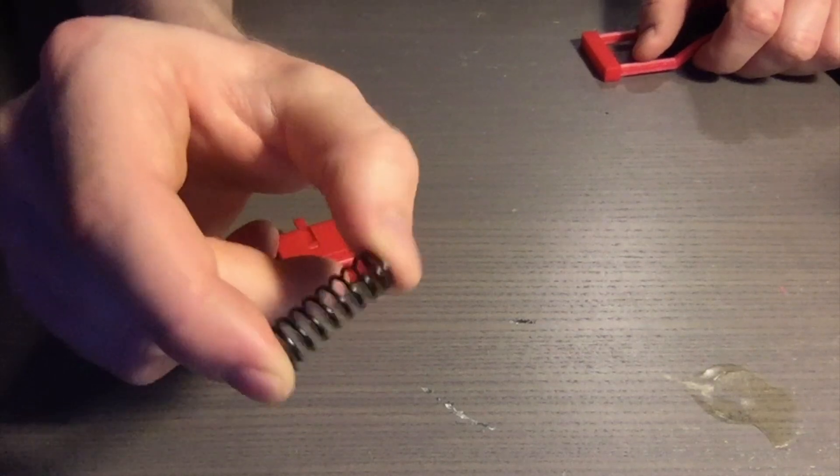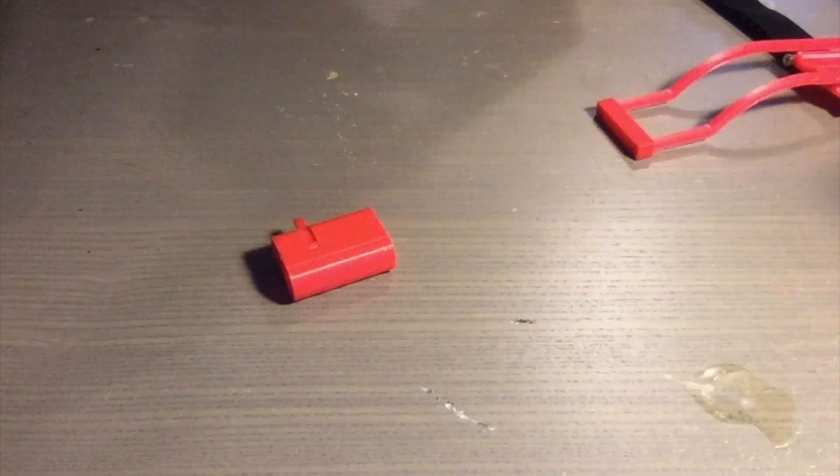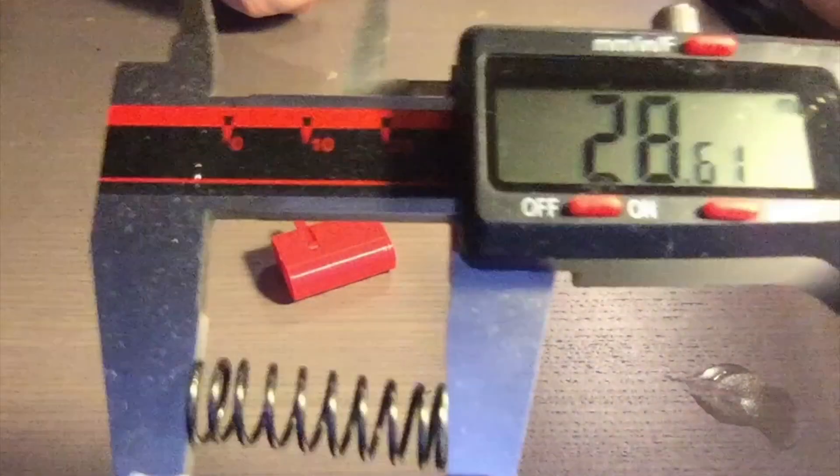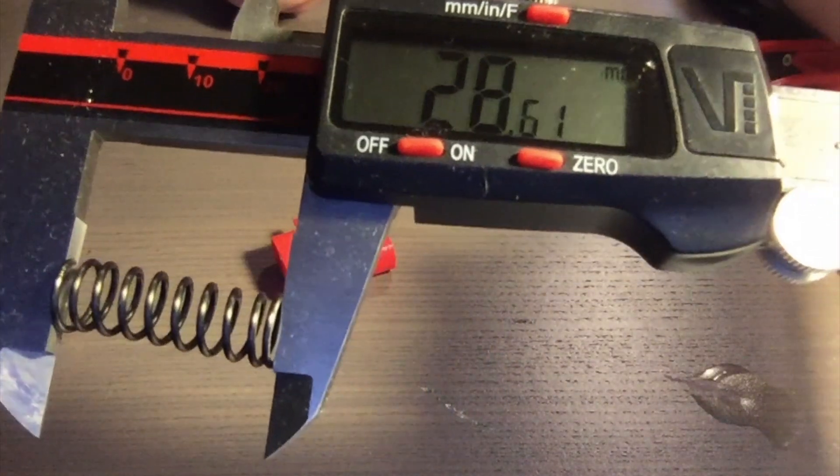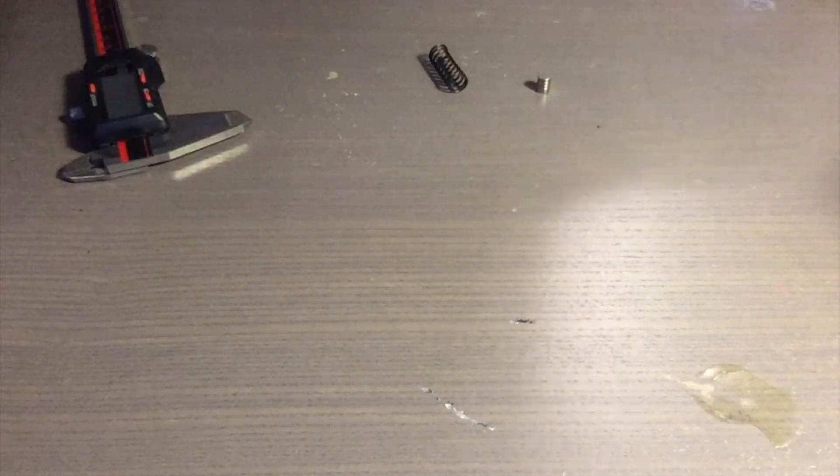So between 1000 and 2000 newtons per meter, this spring has a diameter of about nine and a half millimeters, an unstretched length of about three centimeters. Everything in that ballpark should work for this project.